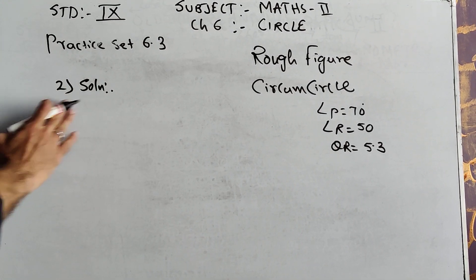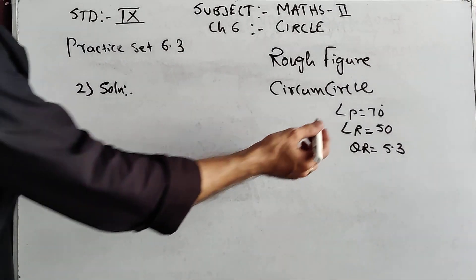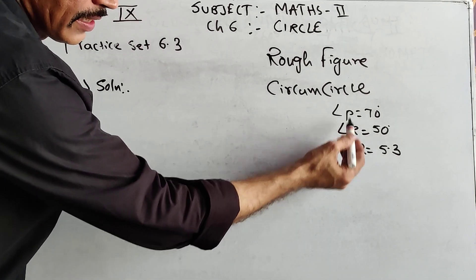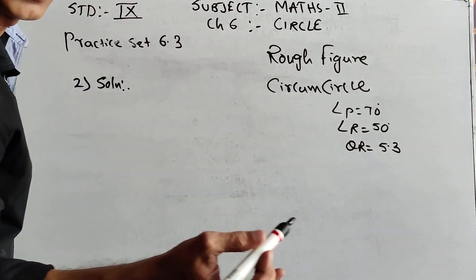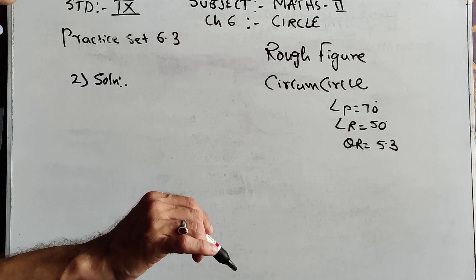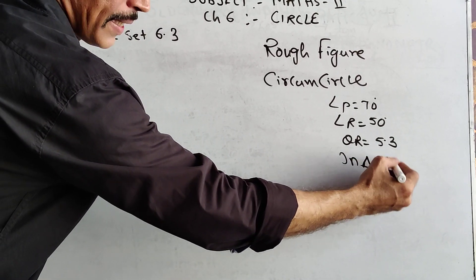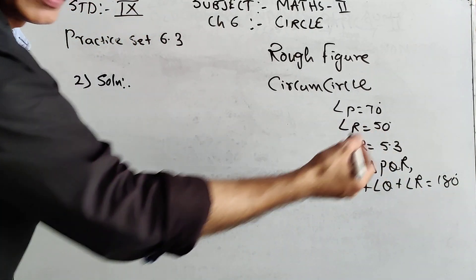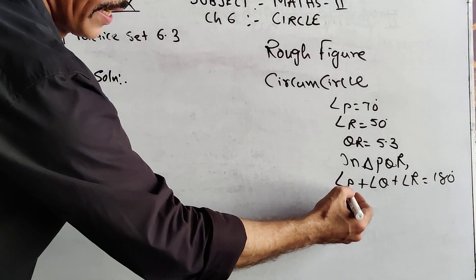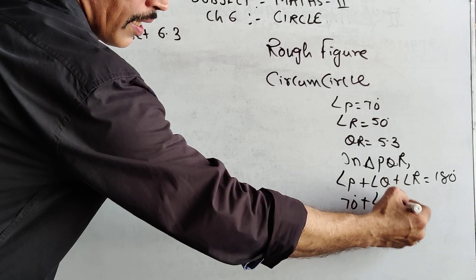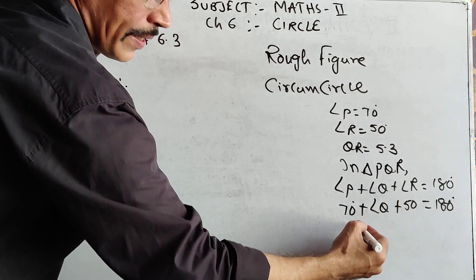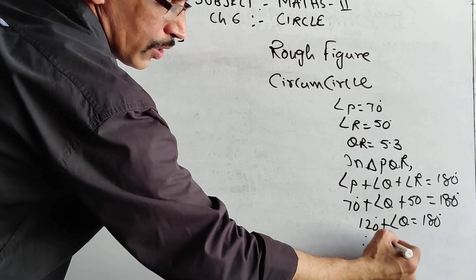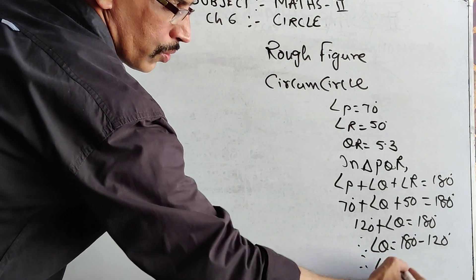Now come to sum number 2, which is of circum-circle. Construct triangle PQR with angle P = 70 degrees, angle R = 50 degrees, and QR = 5.3. Angle Q is missing, so we find it using the angle sum property: angle P + angle Q + angle R = 180°, so 70 + angle Q + 50 = 180, giving 120 + angle Q = 180, therefore angle Q = 60 degrees.